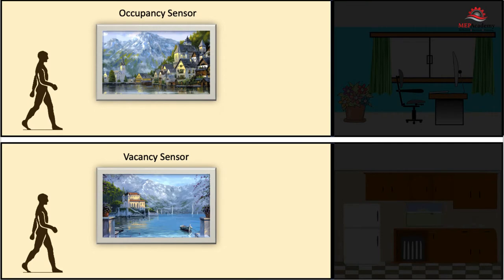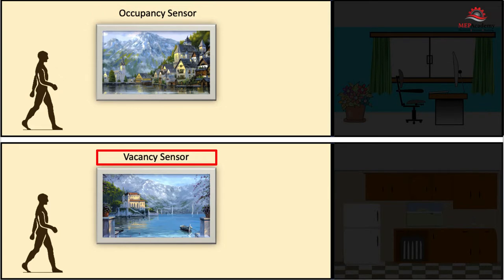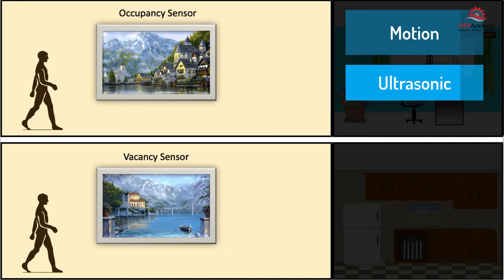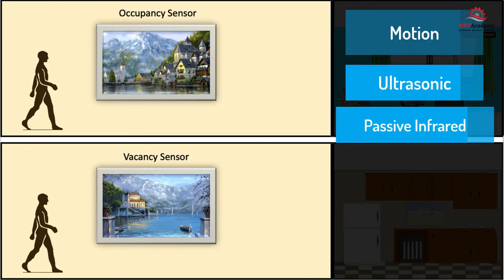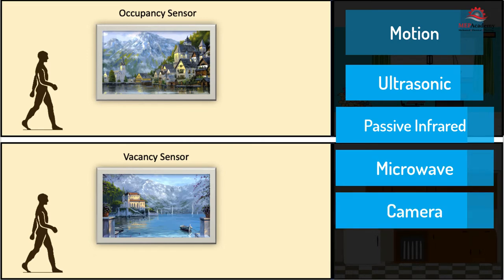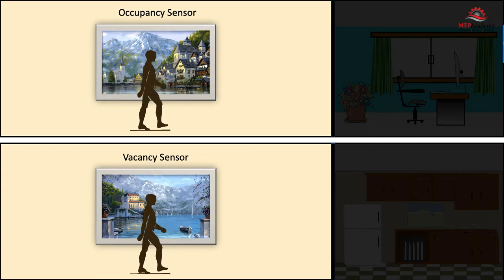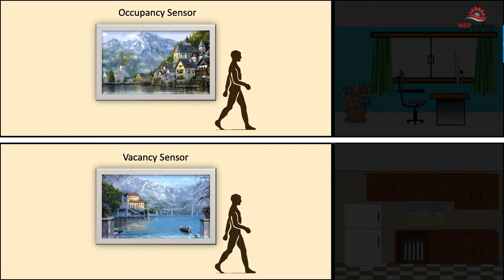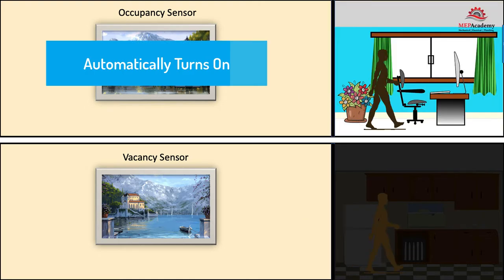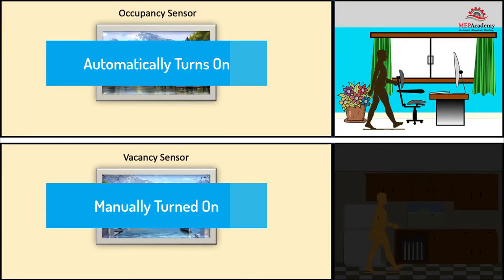The difference between an occupancy sensor and a vacancy sensor is in how they are initially activated. The sensors turn on the lights when the sensor picks up motion through reflective sound waves, radiation, microwaves, or camera technology. The occupancy sensor turns on the lights automatically when motion is detected, while the vacancy sensor has to be manually turned on.